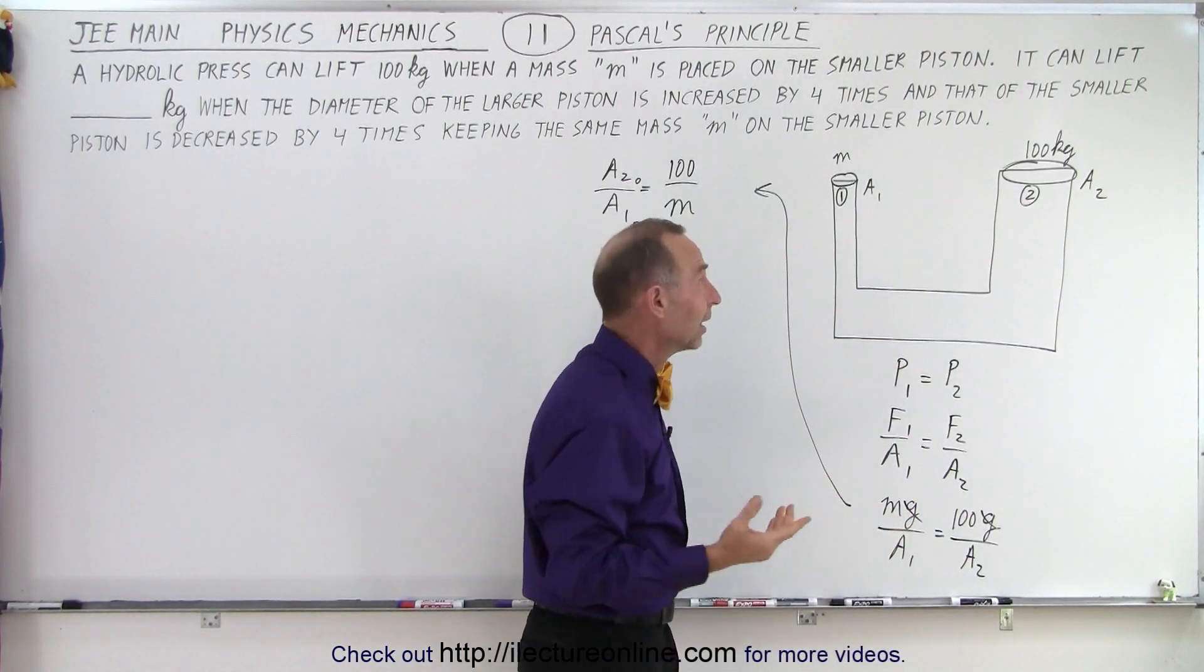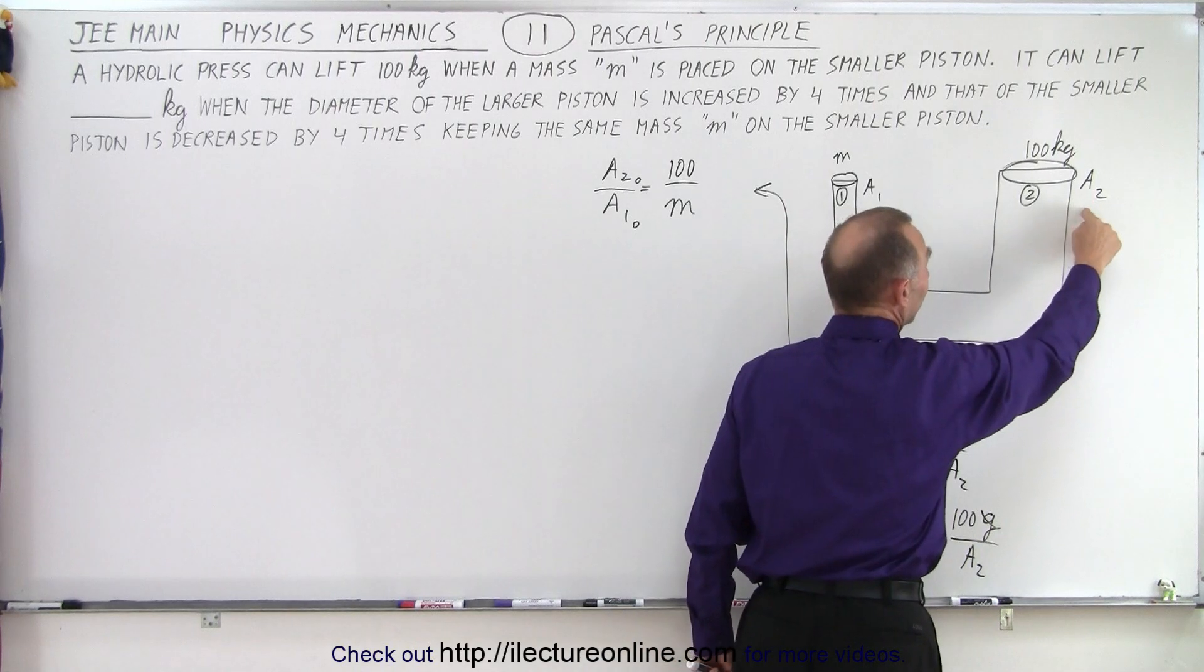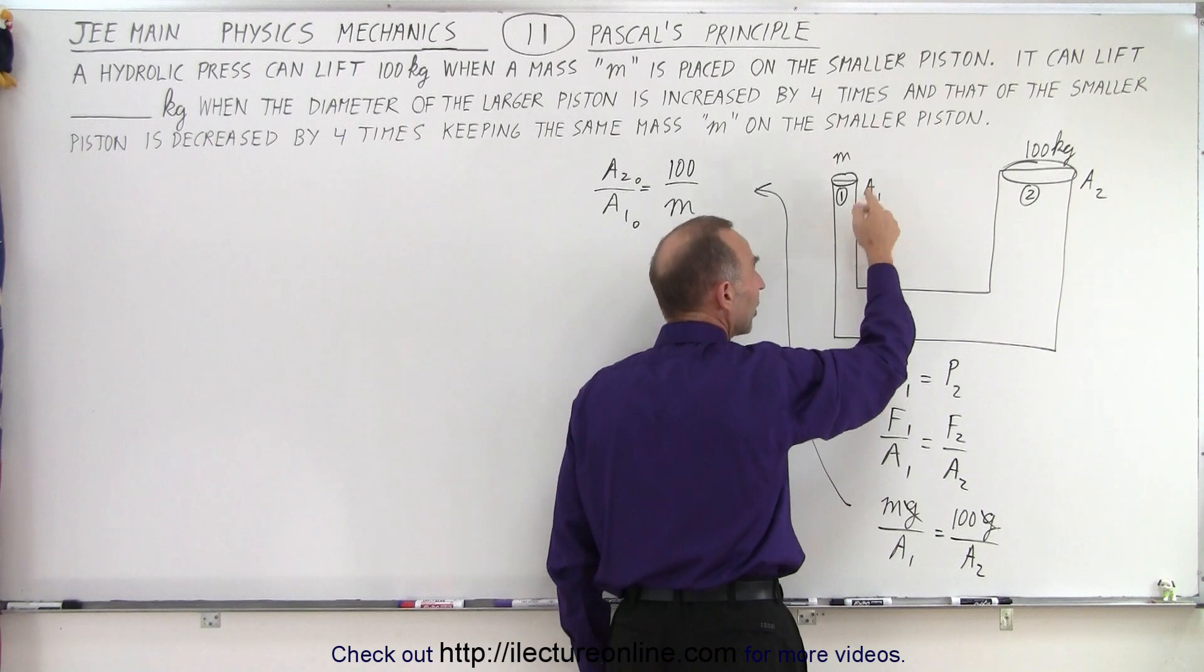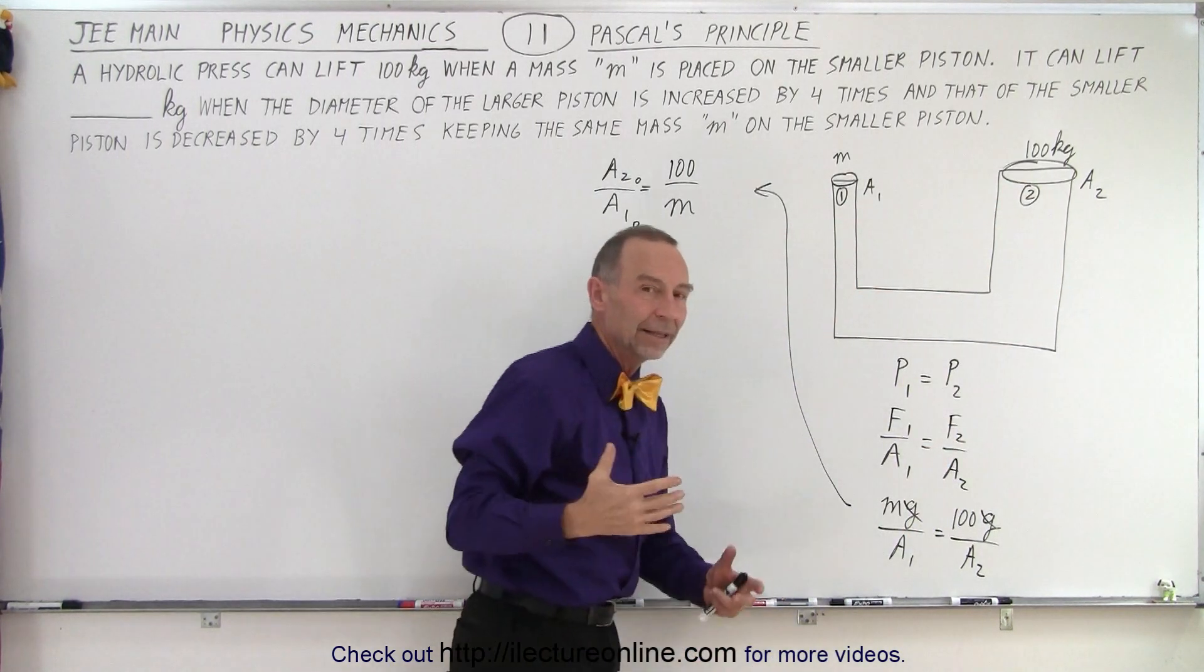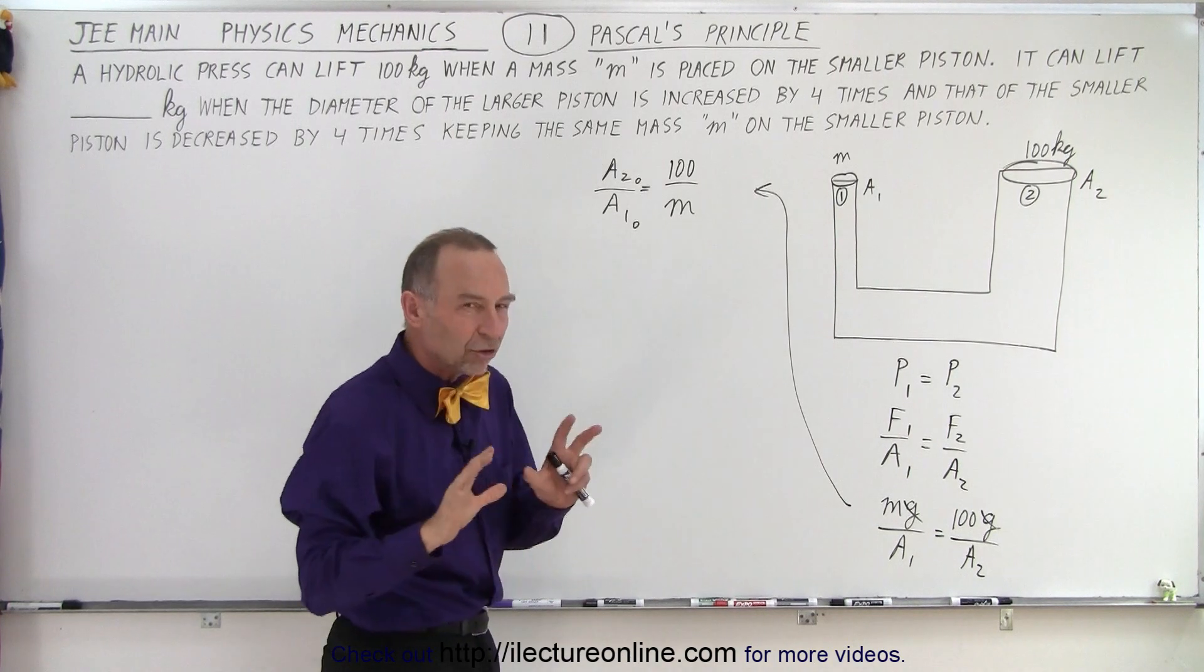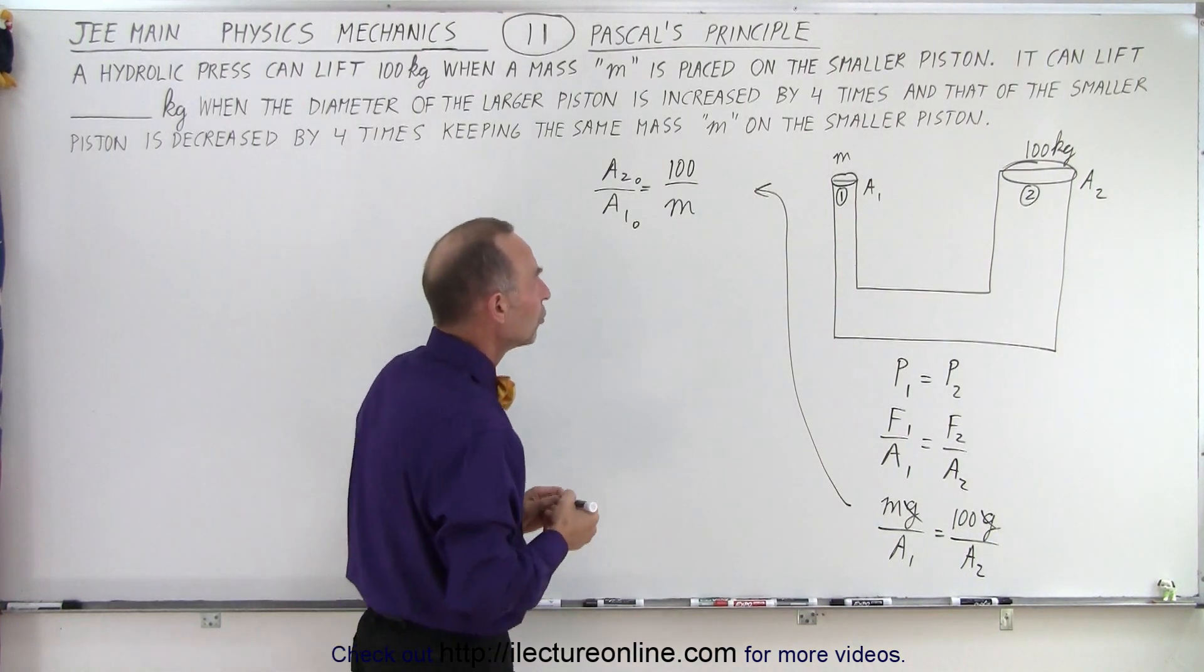So, essentially, what we need to do is if we double the size of this area, we can lift twice as much mass. If we decrease this to half the area, again, we can lift twice the mass there as well. So, we can actually solve this problem rather quickly.